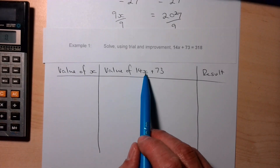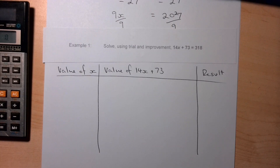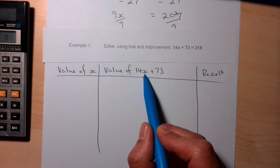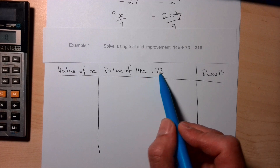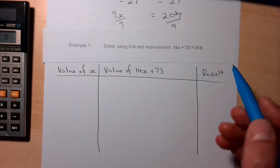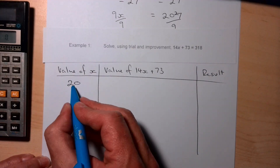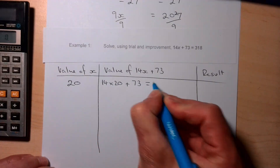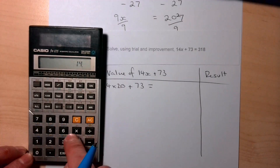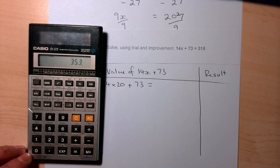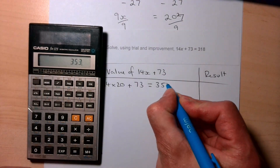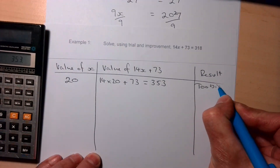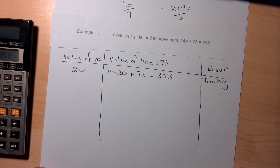To start, we do a bit of mental maths. We need 14 times something, plus 73, to give 318. Trying 10: 14 × 10 = 140, plus 73 is not enough — we need to go bigger. Let's try x = 20: 14 × 20 + 73 = 353. That's a bit too big, so we record 'too big' in our result column.